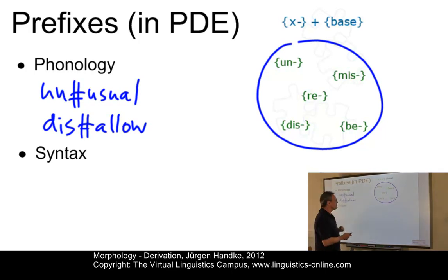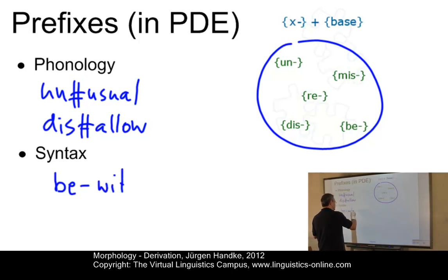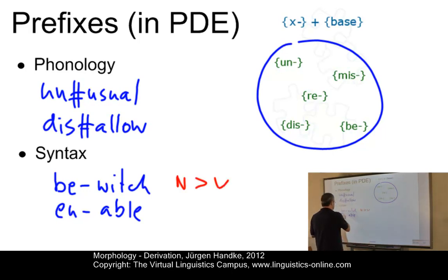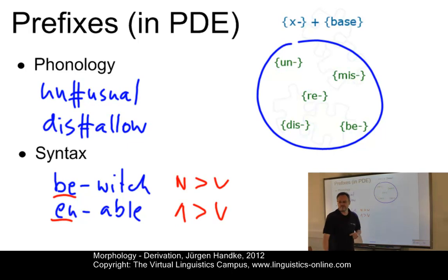On the other hand, some of these prefixes may be syntactically relevant. For example, in 'bewitch' or in 'enable,' you can observe a change from a noun 'witch' to a verb. So 'be-' turns the noun into a verb. And in 'enable,' we have a change from an adjective to a verb — 'en-' turns the adjective 'able' into a verb. So some of these prefixes are syntactically relevant.